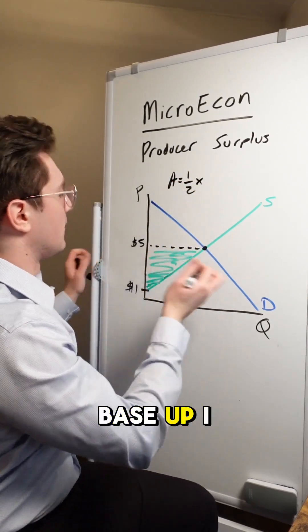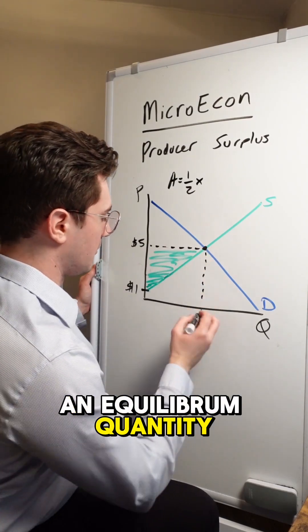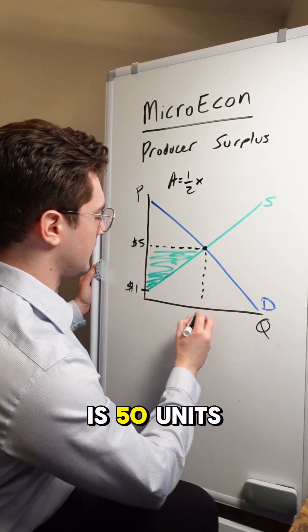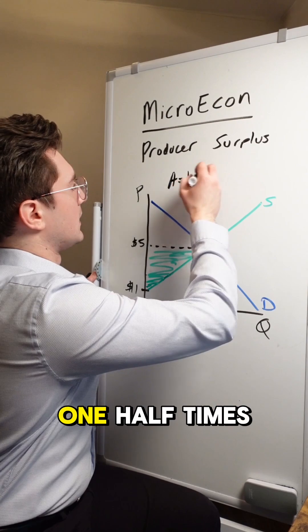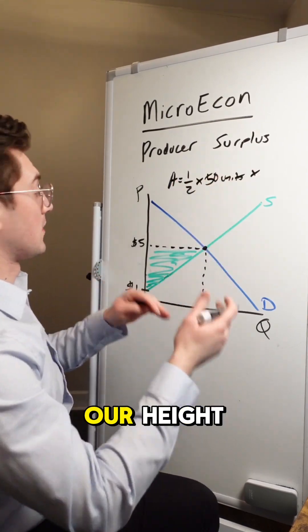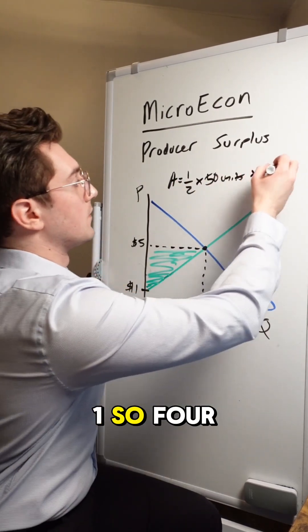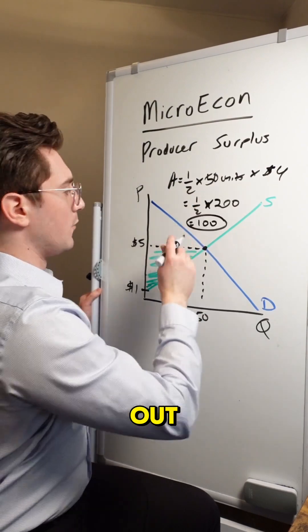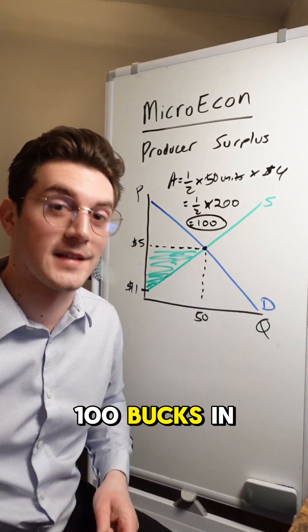So one half times base up, I forgot to assign an equilibrium quantity. Let's say the equilibrium quantity here is 50 units. So we'd say one half times 50 units times our height. So five minus one. So four bucks. And when we solve this out, we get a producer surplus of a hundred bucks in this market.